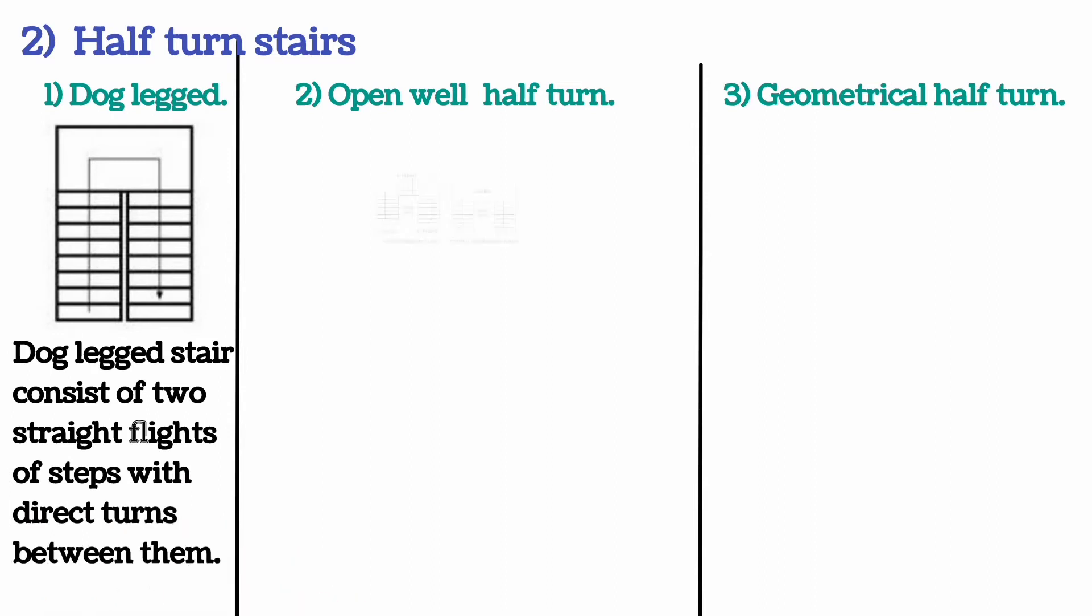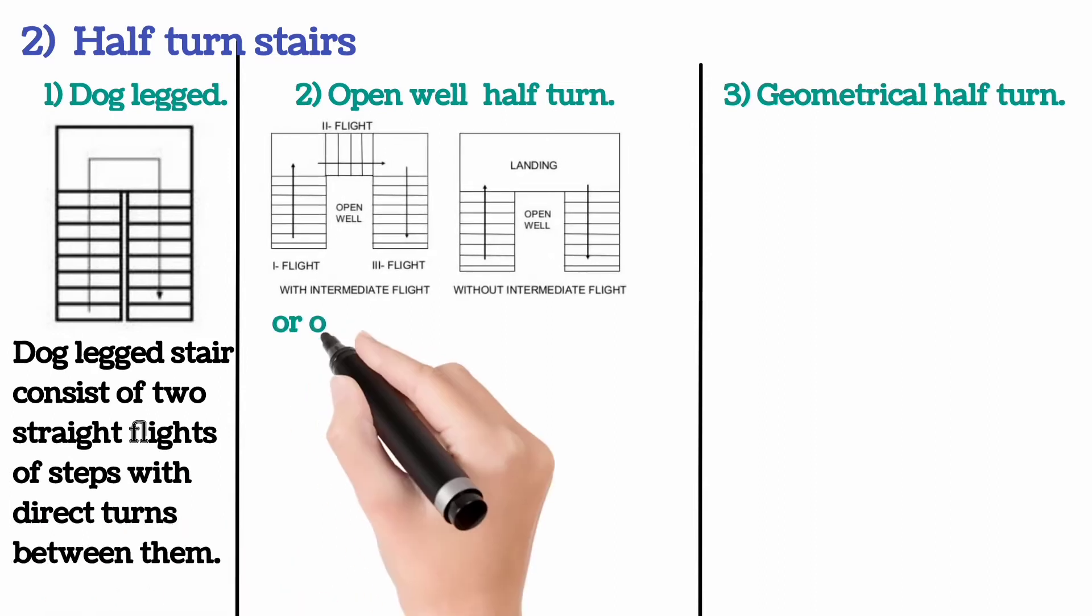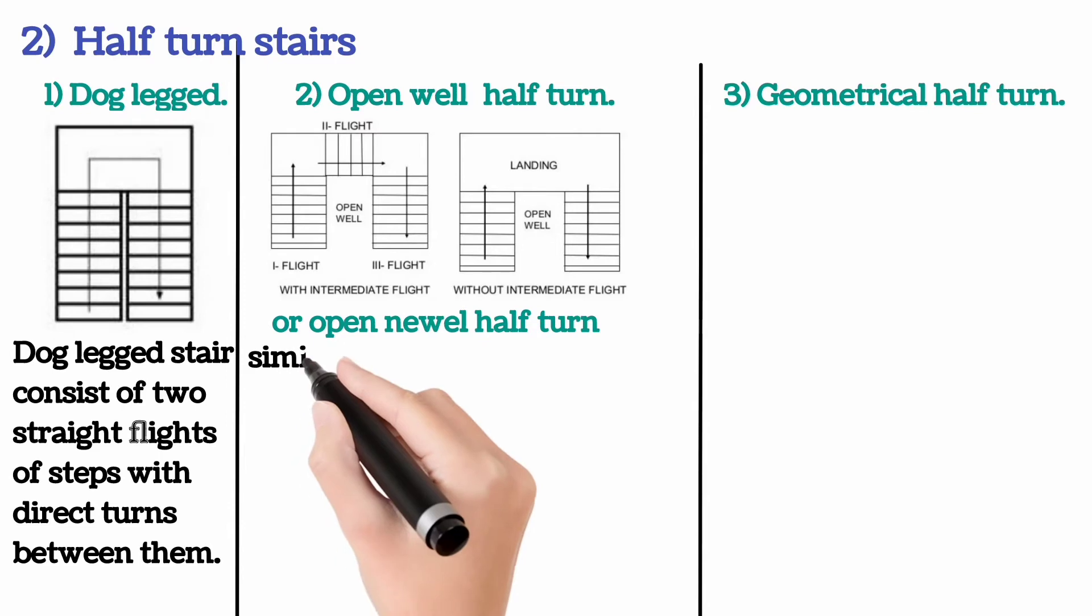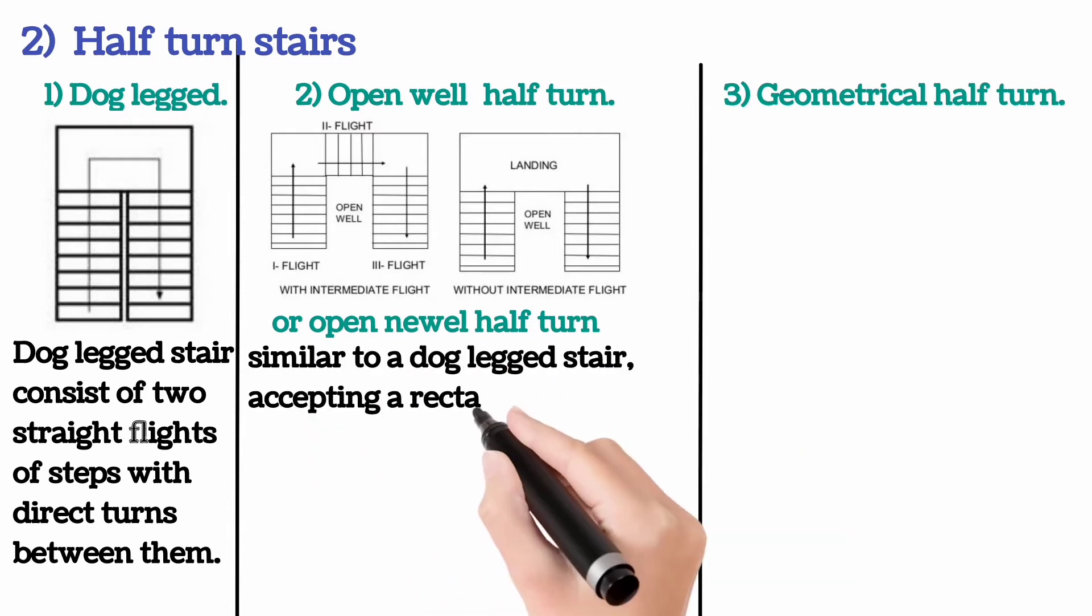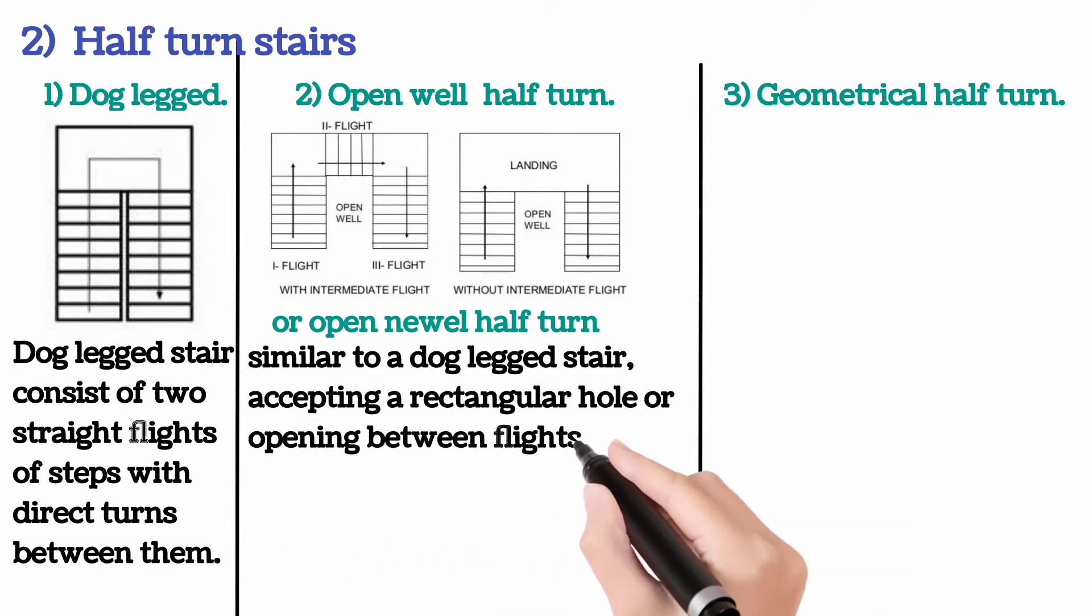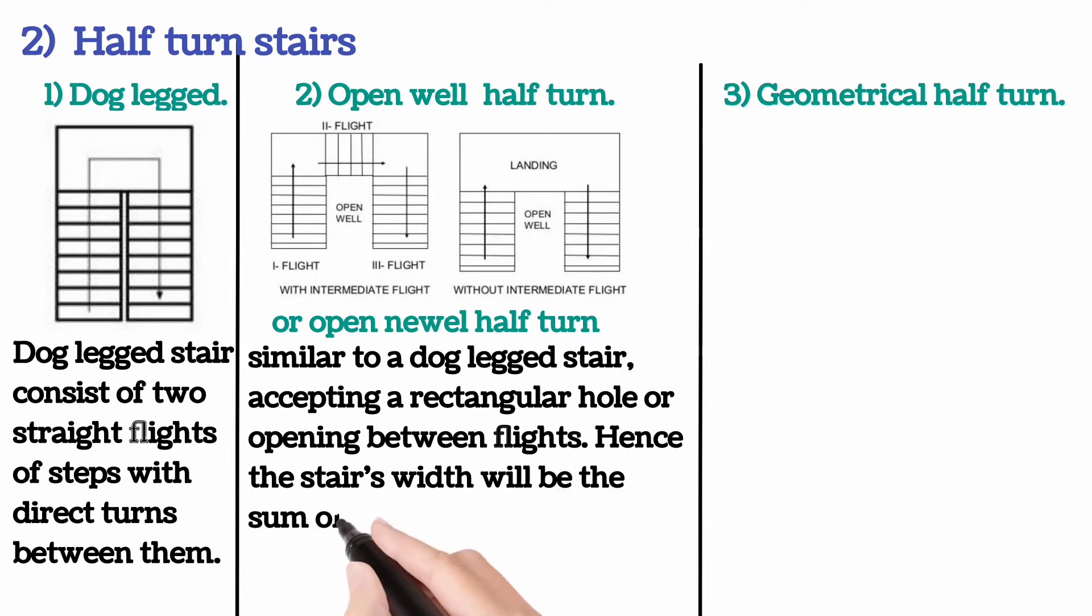Open well half turn, or open newel half turn, is similar to dog-legged staircase excepting a rectangular hole or opening between flights. Hence the stairs width will be the sum of two times step width plus the width of the well.